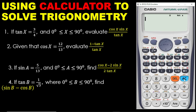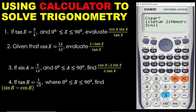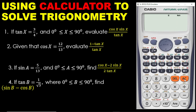Now let's take a look at the second question. Given that cos X is equal to 12 over 13, evaluate 1 minus tan X all over tan X. Once again, to do that you must clear the calculator. So I press Shift, 9, 3, equal to. I have done clearing my calculator.